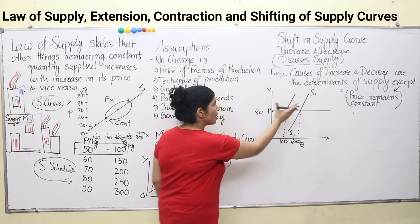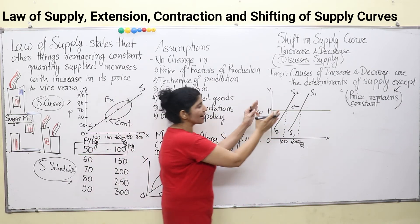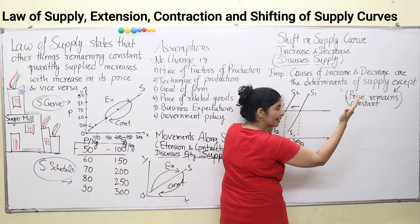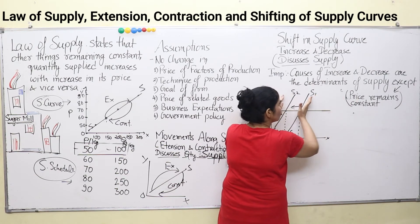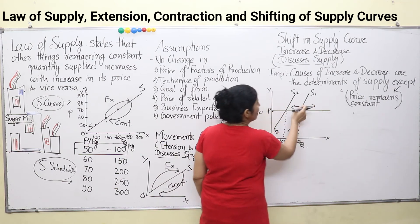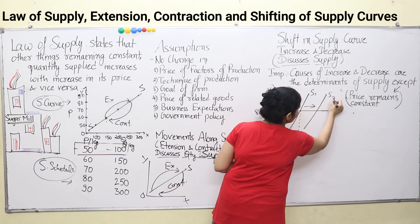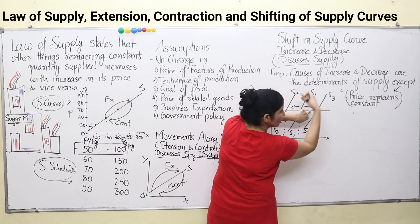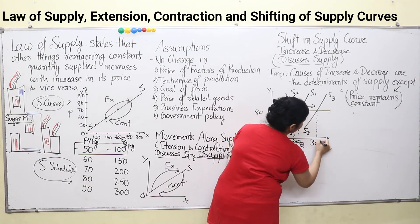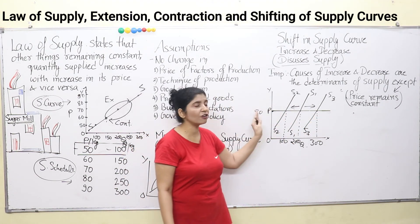This is S1 initially and it has moved towards the left — S2 — which is a backward shift, meaning leftward. To decide if it is a rightward or leftward shift: if your supply curve moves towards the right, this is a rightward or forward shift. If it moves towards the left, it is a leftward or backward shift. So a forward shift is a rightward shift, and a backward shift is a leftward shift. A rightward shift means an increase in supply — the quantity increases from 200 kg to 300 or 350 kg. In a leftward or backward shift, your supply decreases.